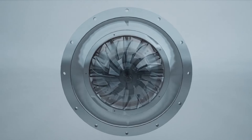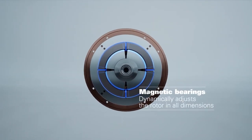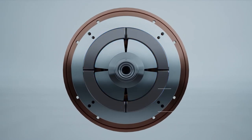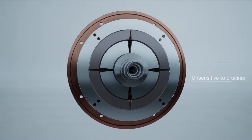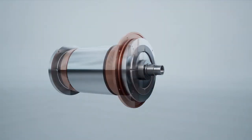Magnetic bearings use three-axis position sensors to control the shaft position, allowing the blower to handle pressure spikes and process upsets.